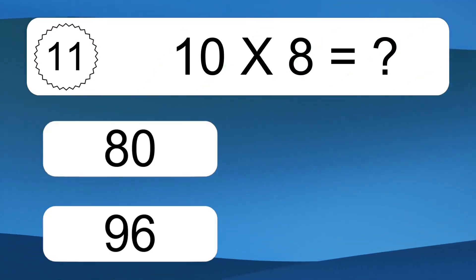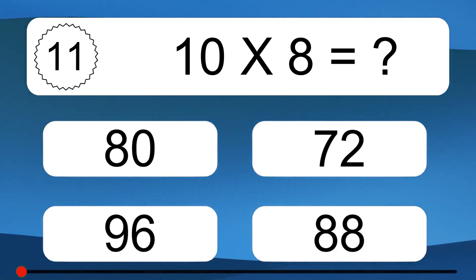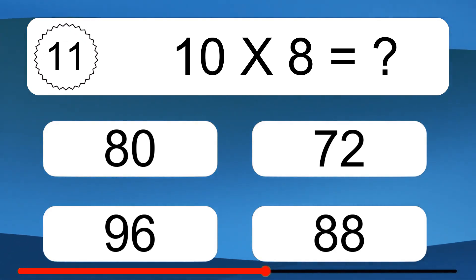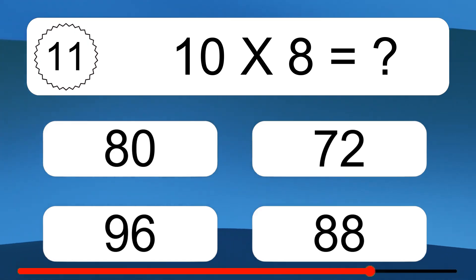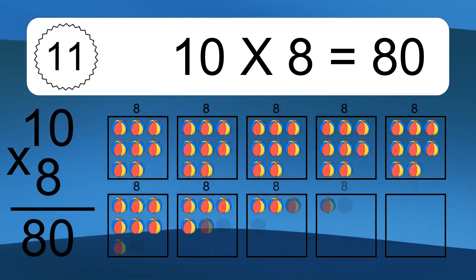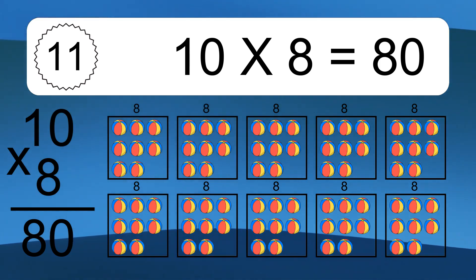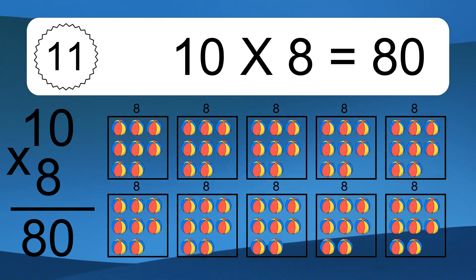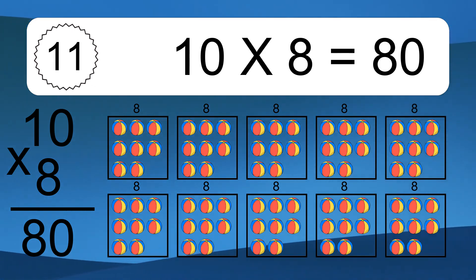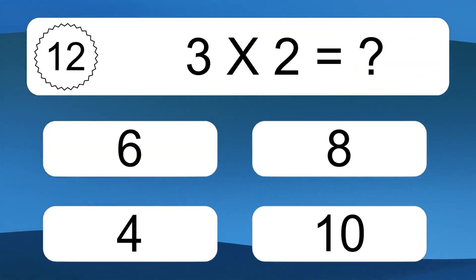10 times 8 equals what? 10 times 8 equals 80. We have 10 boxes, and each box has 8 colorful balls inside. If you count all the balls in all the boxes together, you will have 10 times 8 balls. This equals 80 balls.